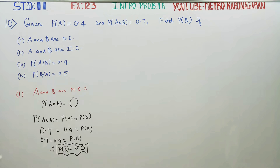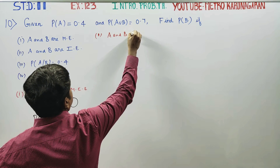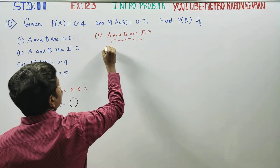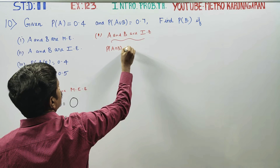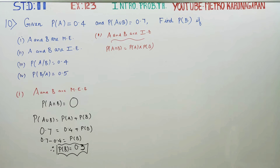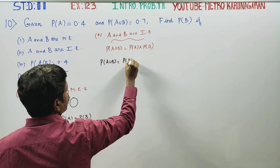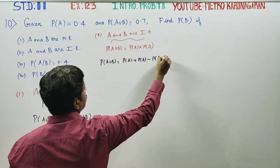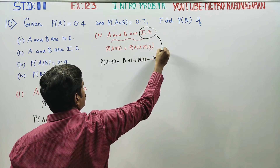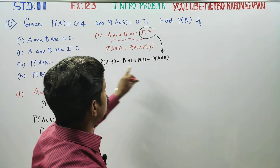Now, if A and B are independent events, we use the formula P(A∩B) = P(A) × P(B). For independent events, intersection definitely exists and has a value. That's why we cannot use the mutually exclusive formula — we must use the full formula P(A∪B) = P(A) + P(B) − P(A∩B).